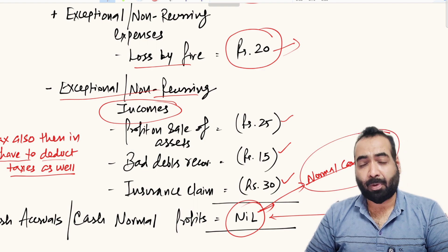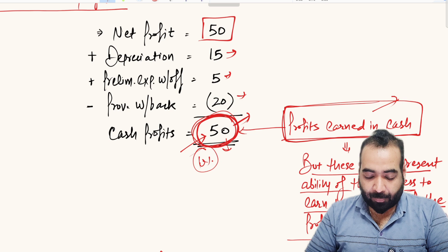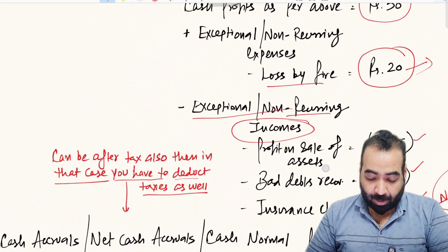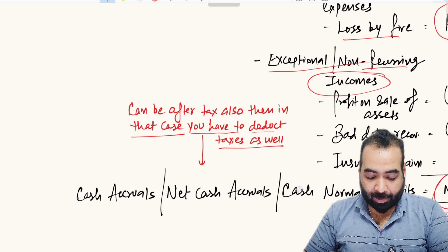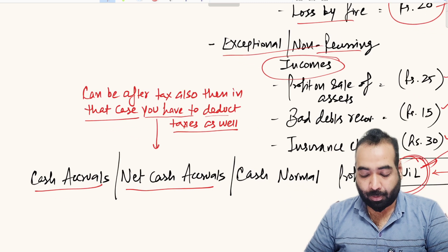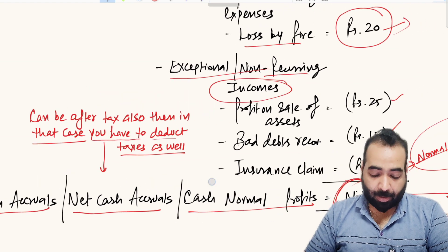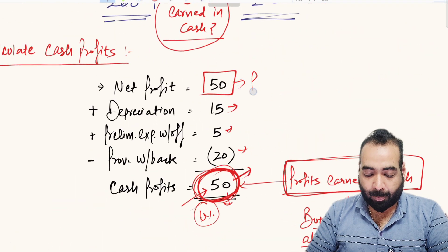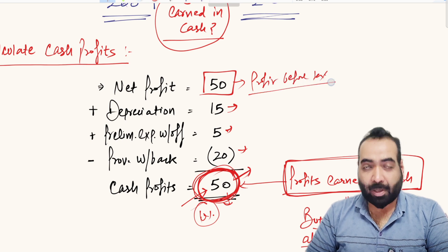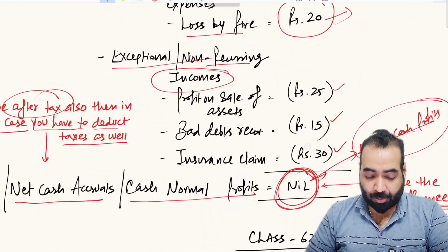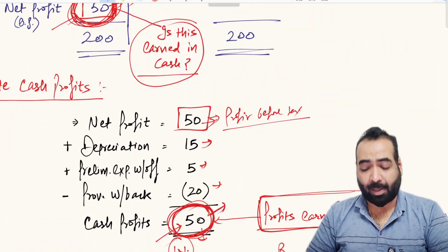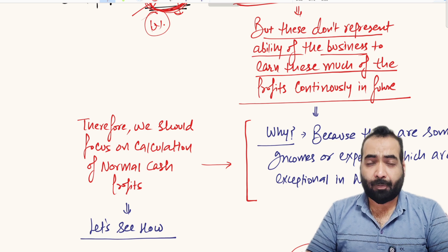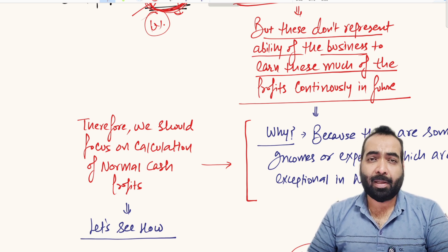These are called normal cash profits of the entity — also known as cash accruals, net cash accruals, or normal profits. We must calculate the normal cash profits because a general cash profit analysis gives an untrue, fake picture. If calculating after tax, you must also deduct the tax amount, since these net profits are before tax. This is the basic foundation I wanted to build before starting this cash flow analysis series. I hope you enjoyed this — we will meet in the next video. Thank you very much.